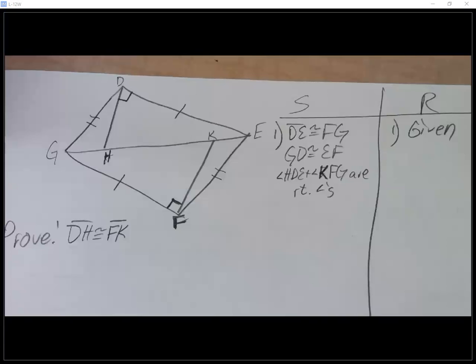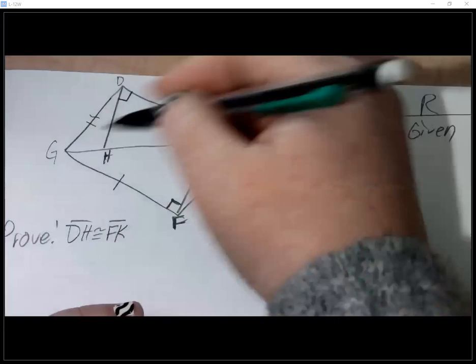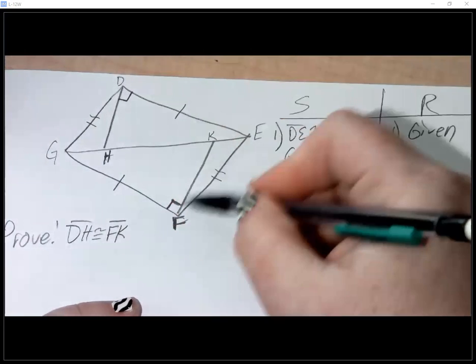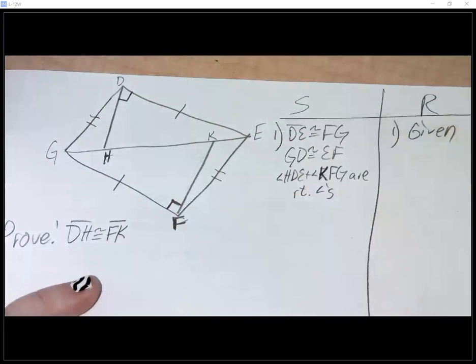Okay, so we're looking at this one. I am supposed to prove DH is congruent to FK at the end of the day, so that's what I'm trying to get. Okay, so first let's find where those even are. Okay, so put these lines here, DH and KF, that's what I'm trying to get.